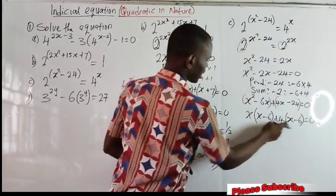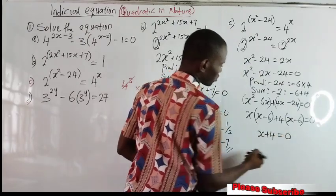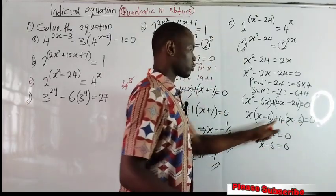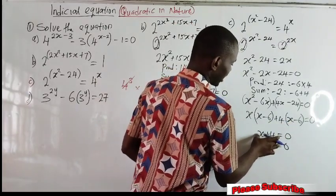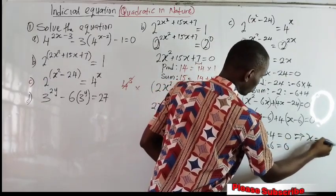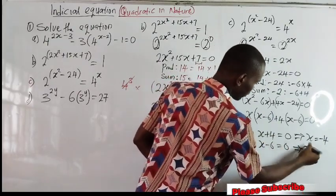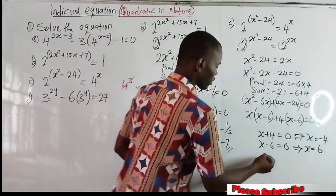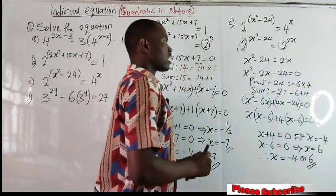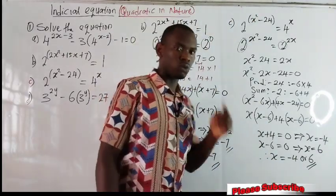We group the ones outside into one bracket: x plus 4. Both brackets are the same, so we take one equal to 0. So x minus 6 equal to 0 and x plus 4 equal to 0. Making x the subject: x equals negative 4, because 4 crosses over to become negative. Then 6 crosses over, so x becomes positive 6. Therefore, x is either minus 4 or positive 6. That is how we were able to get the solution to this equation involving quadratic indices.